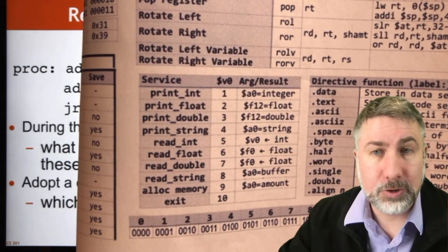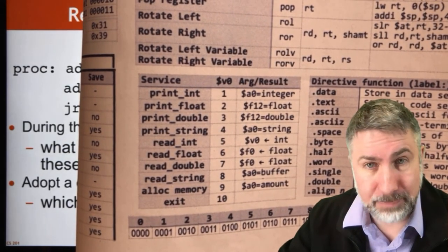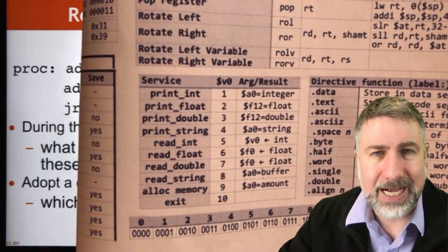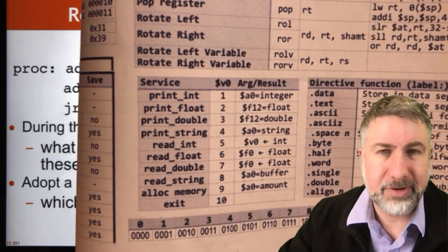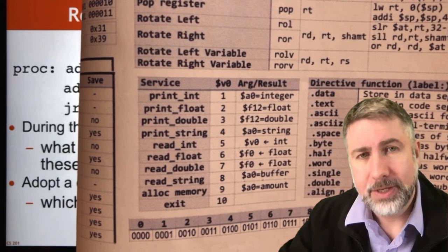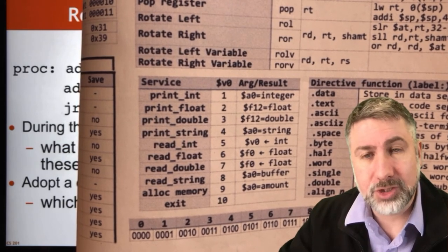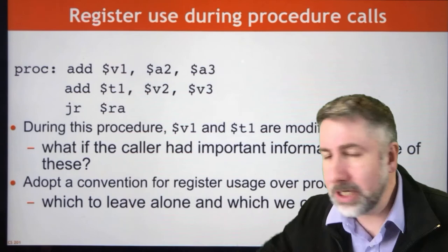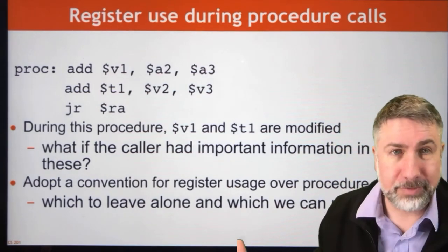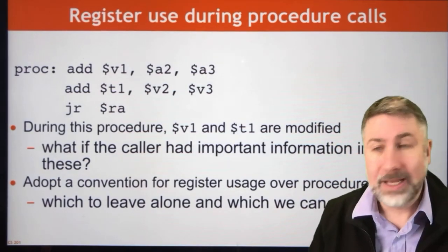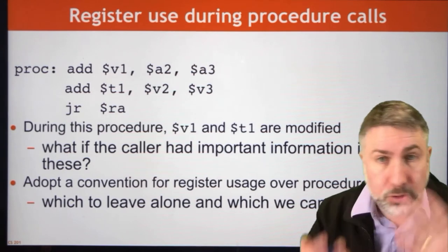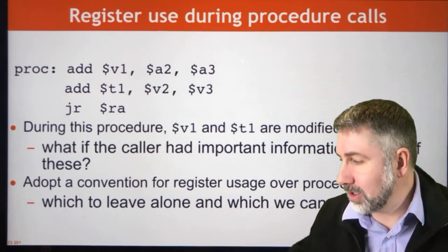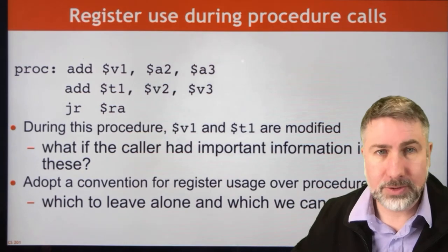We can also put some information in other registers depending on which kind of syscall we're doing, which can either pass information to or retrieve information from the syscall procedures. So this is already an agreed-upon location for putting information to call and return. In regular user-defined subroutines there are a set of standard registers that we're going to use.